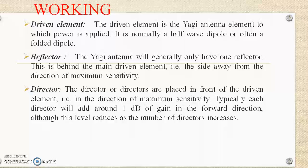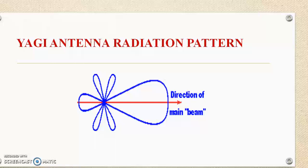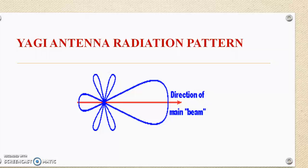This is the radiation pattern of the antenna. You can see the direction of the main beam, also called the main lobe, which is a radiation lobe containing the direction of maximum radiation. The minor lobe refers to any lobe except the major lobe. The minor lobe is classified into the side lobe and the back lobe. The side lobe is present adjacent to the main lobe, and the back lobe is present on the opposite side of the main lobe.